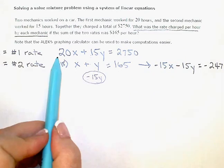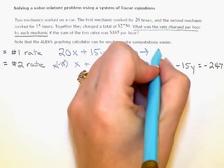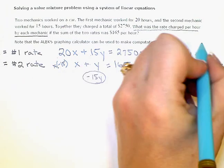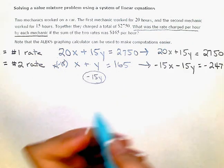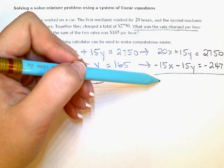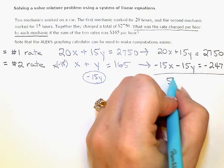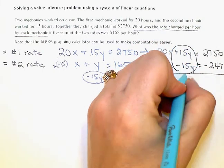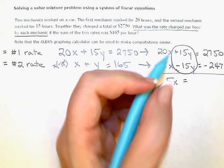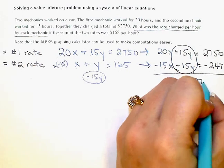Now this top equation, I'm just going to copy it over above this one: 20x plus 15y equals 2,750. I'm going to use column addition and combine my like terms straight down. So 20x minus 15x leaves me with 5x. These two terms eliminate - the plus 15y and minus 15y. And then for the constants, 2,750 minus 2,475 equals 275.